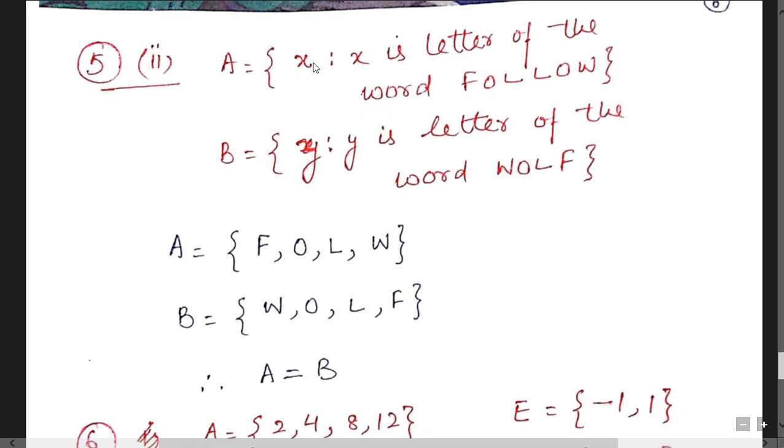Second part of question number 5. X such that x is a letter of the word follow. And second is wolf. It means first set is F, O, L and W. And second is W, O, L and F. Both the sets are equal.